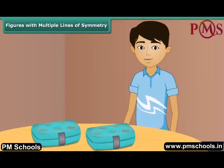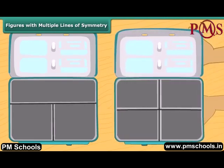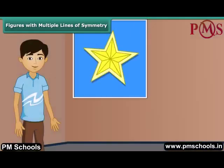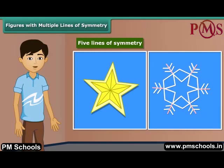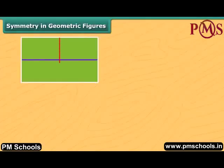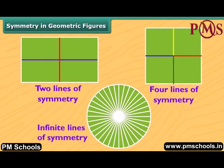Archie has two lunch boxes. One has three lines of symmetry — she doesn't like this box and keeps it away. She picks up another one: this box has four lines of symmetry. Look at this beautiful star — it has five lines of symmetry. What about this pattern? It has six lines of symmetry. Rectangles have two lines of symmetry, a square has four, and a circle has infinite lines of symmetry.